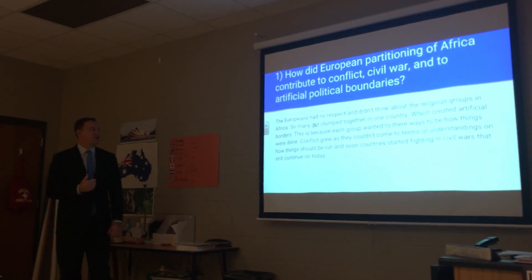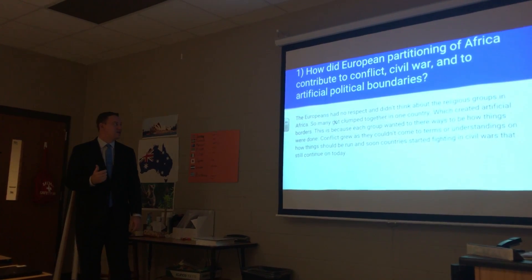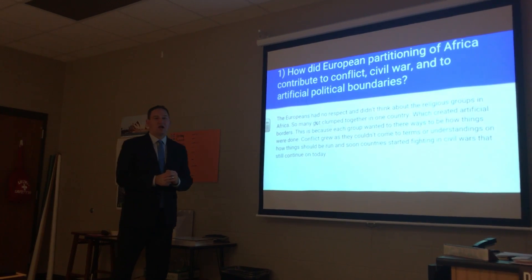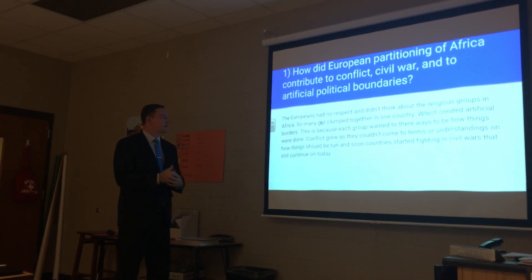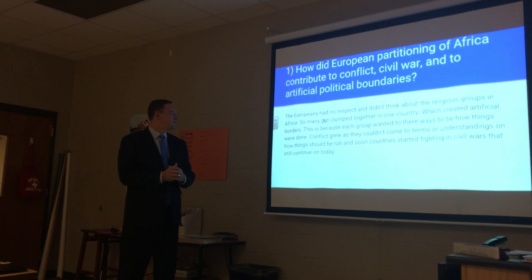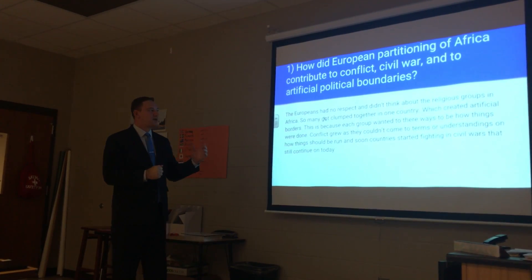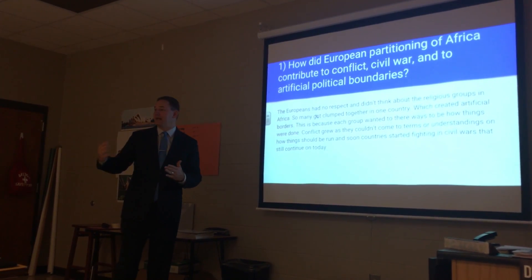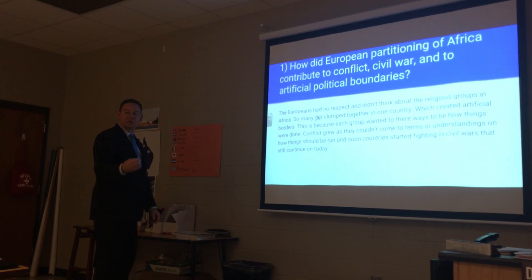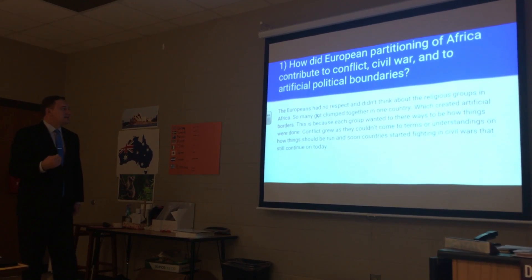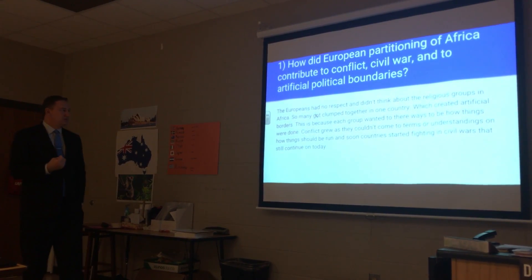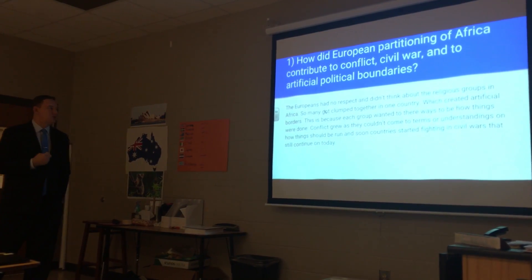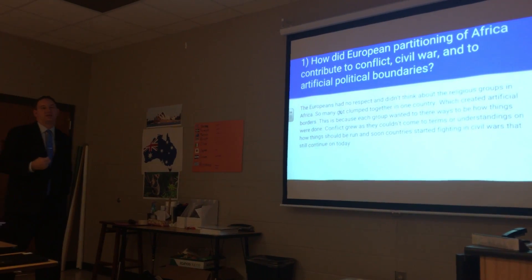How did it contribute to conflict, civil war, and to artificial political boundaries? The Europeans had no respect for and did not consider the religious groups or ethnic groups in Africa. So many got clumped together in one country, which created artificial borders, because each group wanted their way to be how things were done. Every country was trying to implement their own assimilation among their people. Conflict grew as they could not come to terms or understandings on how things should be run, and soon countries started fighting in civil wars that still continue today.